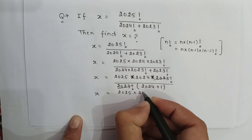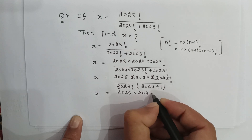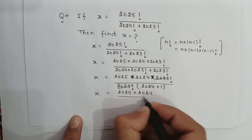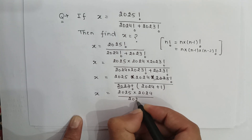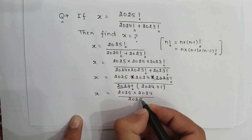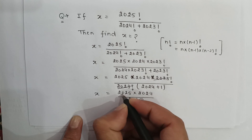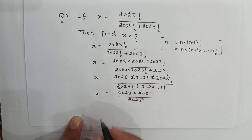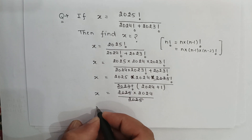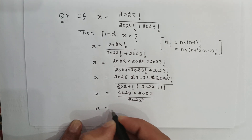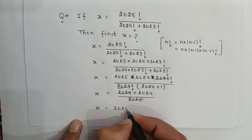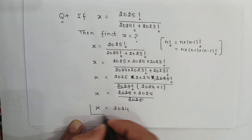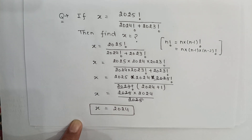So here x is equal to 2025 multiplied by 2024, whole over 2025, and 2025 cancels out. So x is equal to 2024 — and this is the upcoming year!